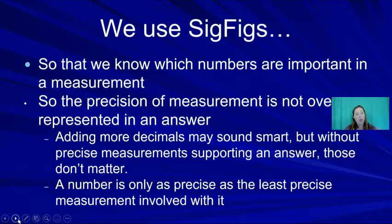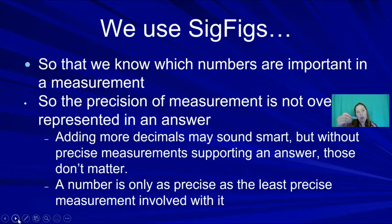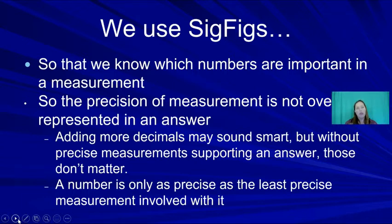Significant digits help us know what part of a measurement is important. When taking a measurement, you always estimate one additional digit. For example, if the meniscus is between 6.2 and 6.3 milliliters, you estimate 6.25. That last digit — the 5 — is estimated. In science, the last digit of any measurement is always an estimated digit.